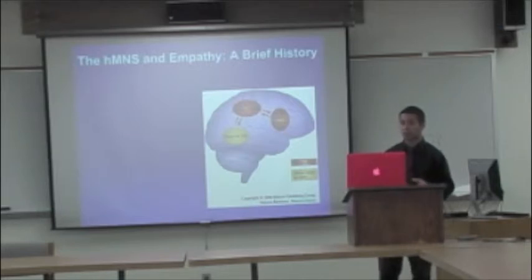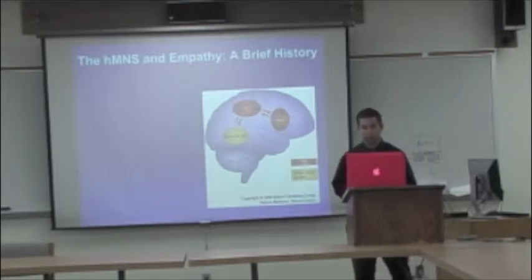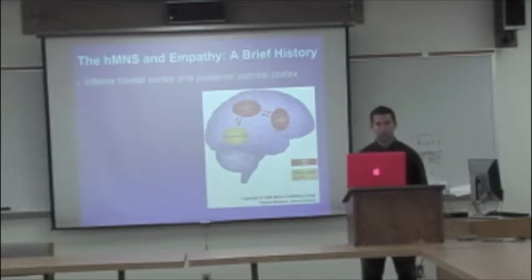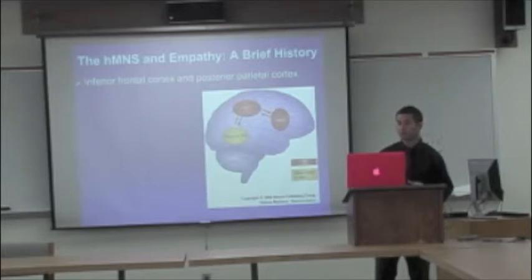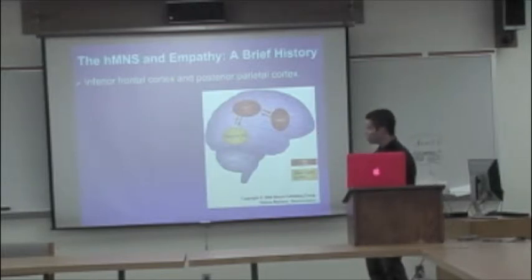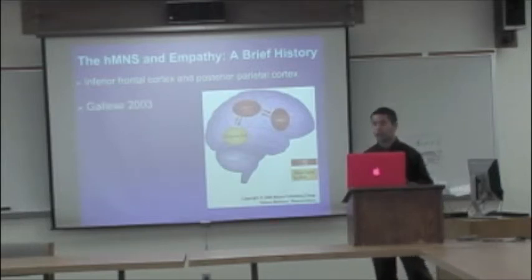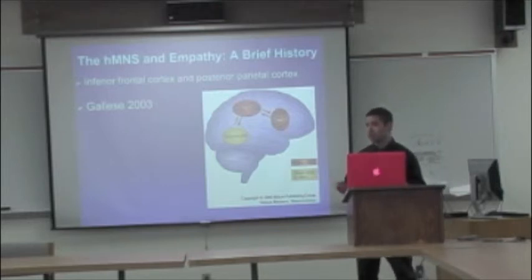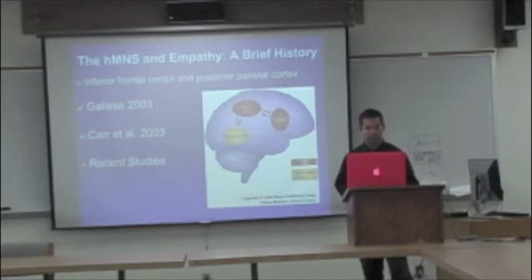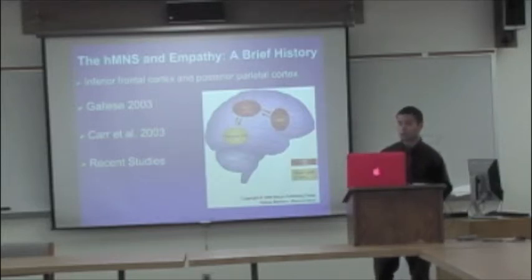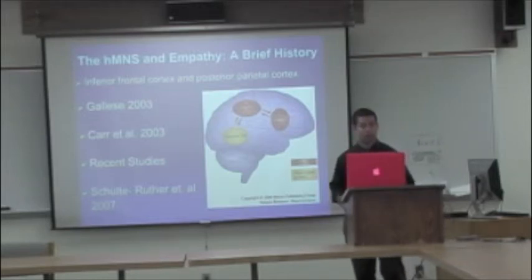In the human mirror neuron system and empathy, I'm going to give you a brief history — a few important studies that pertain in particular to my study. First, just to give you an overview, the areas proposed to be part of this mirroring system are the inferior frontal cortex and the posterior parietal, which are the two little red ovals you see up here. In 2003, Blakemore showed that shared emotional expressions can be traced back to this human mirror neuron system. Also in 2003, Carr et al. observed that the human mirror neuron system components were active during observation and imitation of facial emotional expressions. More recently, studies have shown that the perception of expressions and emotional states recruits this inferior frontal cortex, and one of these is the Schulte-Ruther et al. 2007 fMRI study, which I will go into a little bit more.